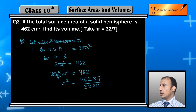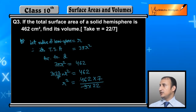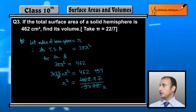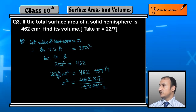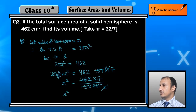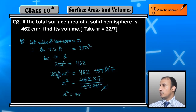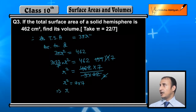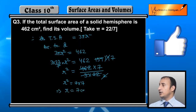Now simplifying: 462 × 7 divided by 3 × 22. We cancel 3, and cancel 22 with the even factors, leaving 7 × 7. So r² = 7 × 7 = 49, therefore r = 7 centimeter.